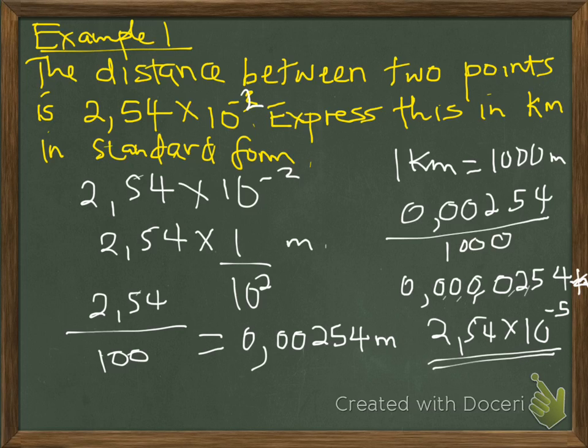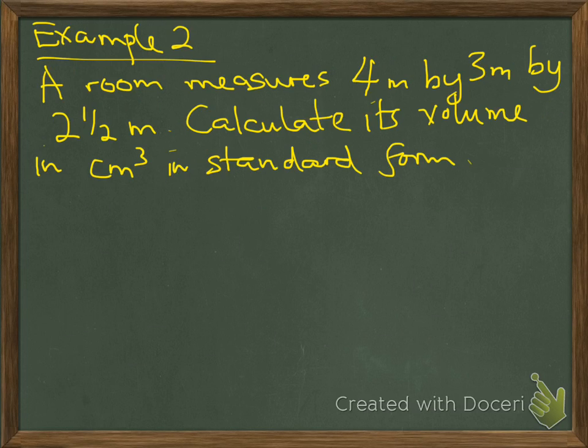Let's look at another example. A room measures 4 meters by 3 meters by 2 and a half meters. Calculate its volume in cubic centimeters in standard form. Therefore, it means 4 times 3 times 2.5. This will therefore give us 30 cubic meters.